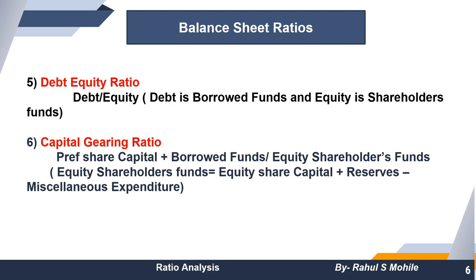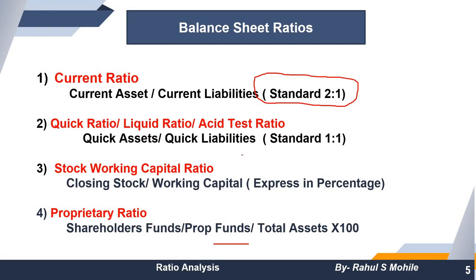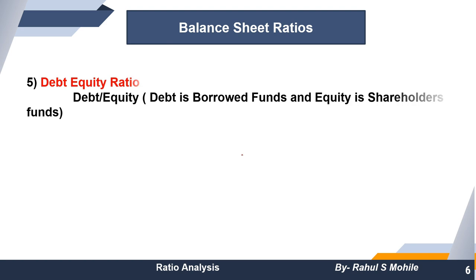You need to understand every ratio and its applicability. For example, the current ratio shows the short-term solvency position of the company. The liquid or quick ratio shows the immediate solvency position of the company. MCQs can ask which ratio reveals a particular solvency position, so remember these distinctions.